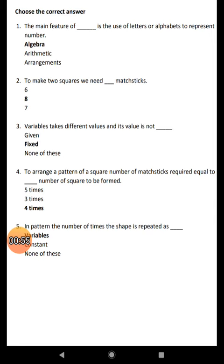To arrange a pattern of squares, the number of matchsticks required equals 4 times the number of squares to be formed. In a pattern, the number of times the shape is repeated is a variable.